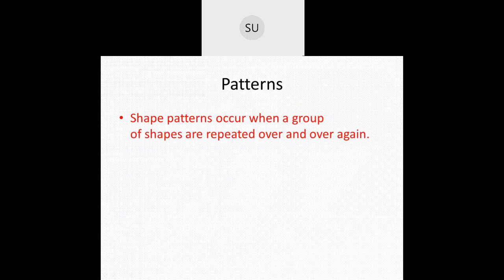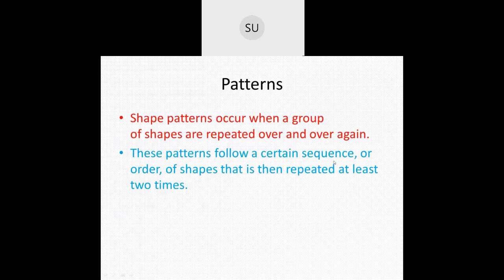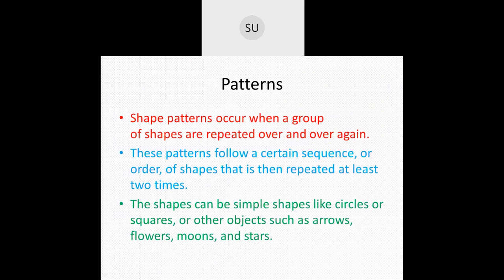Now we will see what other patterns there are. Shape patterns are those which occur when a group of shapes are repeated over and over again. These patterns follow a certain sequence or order of shapes that is then repeated at least two times. They follow a certain sequence, order, or rule, and when these shapes are repeated at least two times that forms a pattern. The shapes can be simple circles or squares, or it can be objects such as arrows, flowers, moons and stars. Patterns can be made with various things.